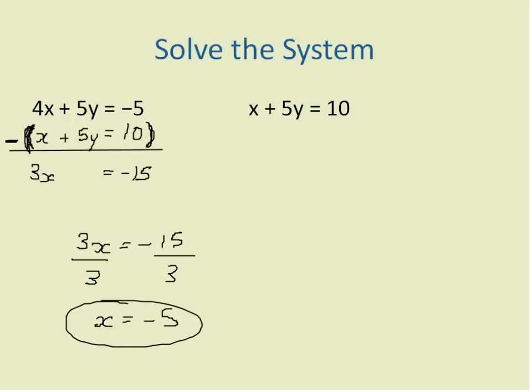I'll substitute that into any equation. I think that equation this time looks easier, so I'll pick that one. Negative 5 plus 5y is equal to 10. Add 5 to both sides of the equation. 5y is equal to 15. Divide both sides by 5 to get y by itself. Y is equal to 3.